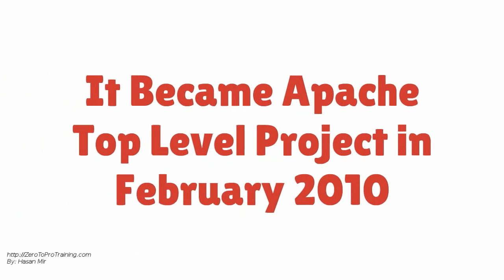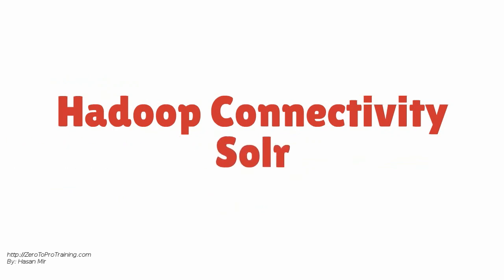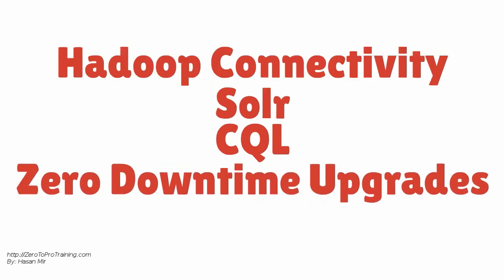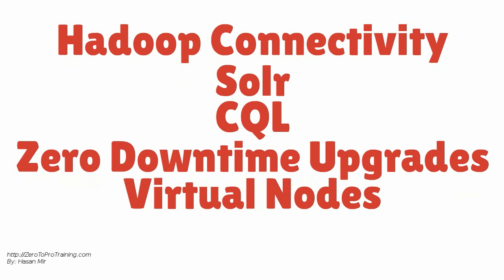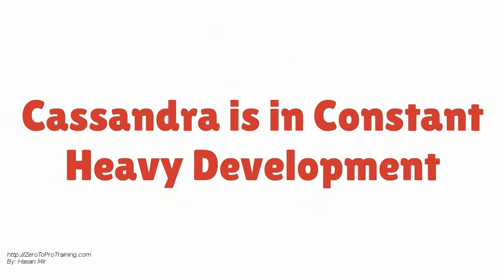It became a top-level Apache project in February of 2010. After its graduation to a top-level Apache project, Cassandra has come a long way. Cassandra now supports Hadoop connectivity, text search integration through Solr, Cassandra Query Language, zero downtime upgrades, virtual nodes, and self-tuning caches. There are new features being added continuously, and Cassandra is in constant heavy development.